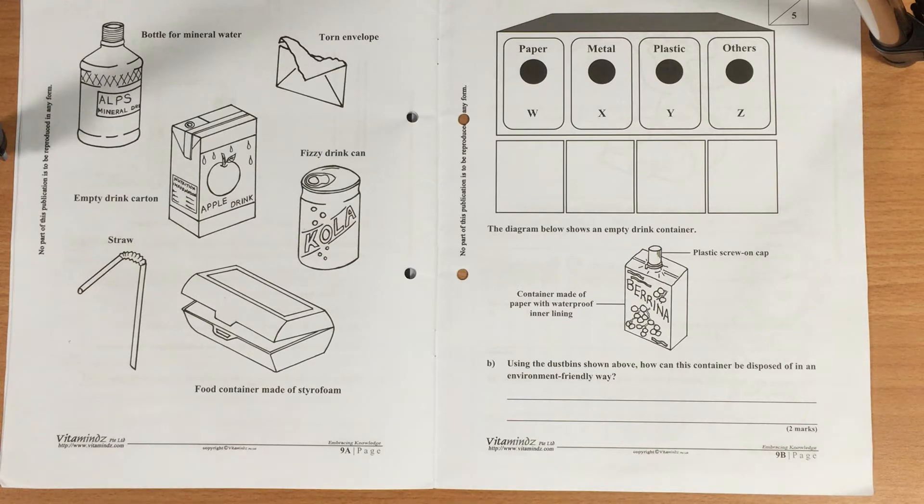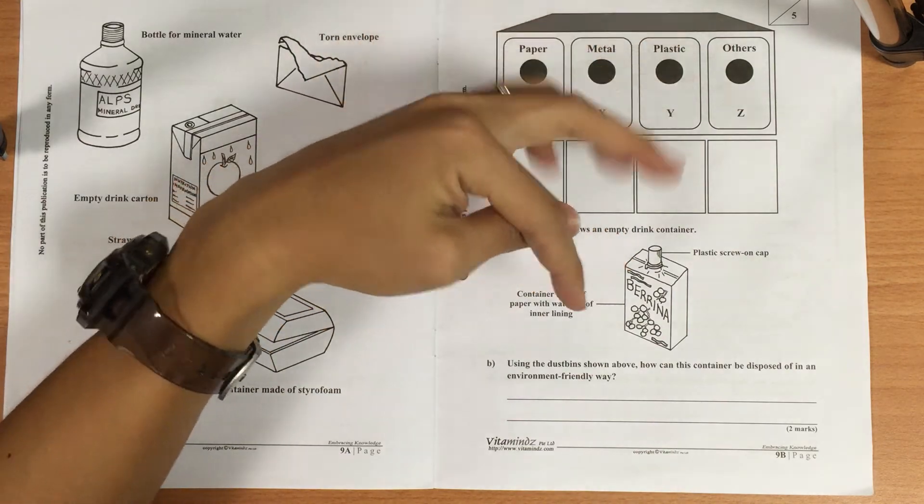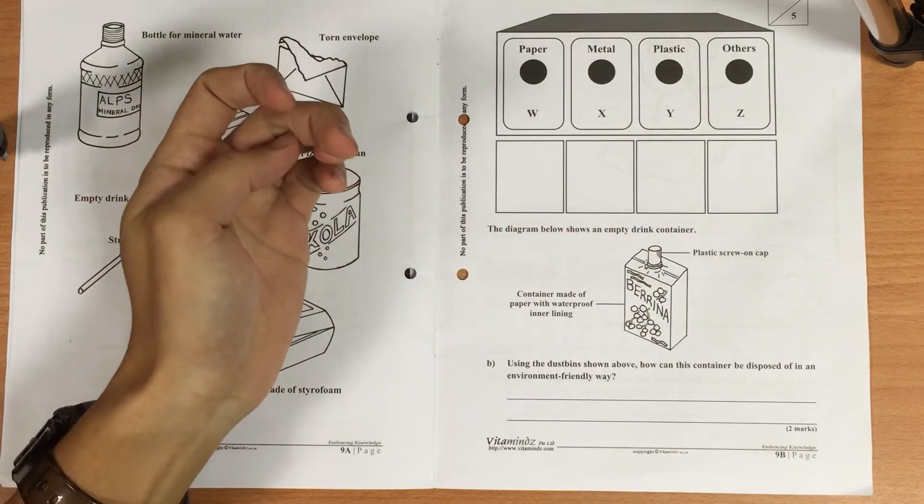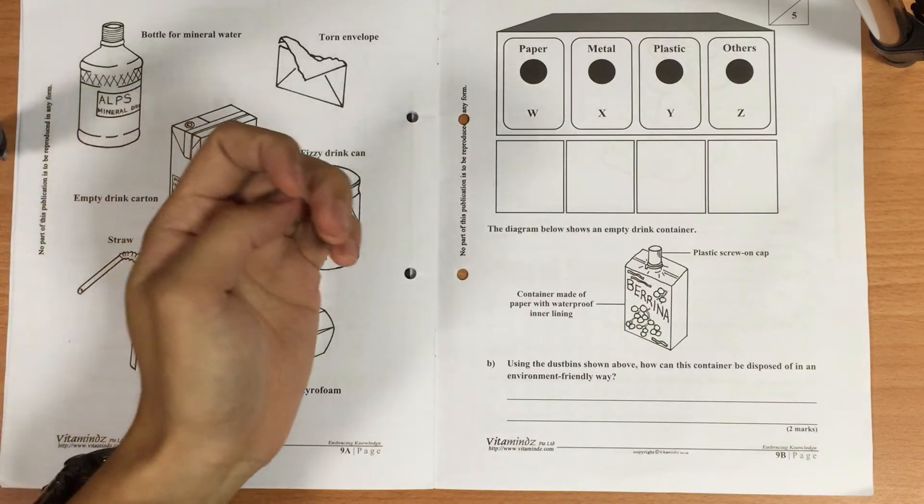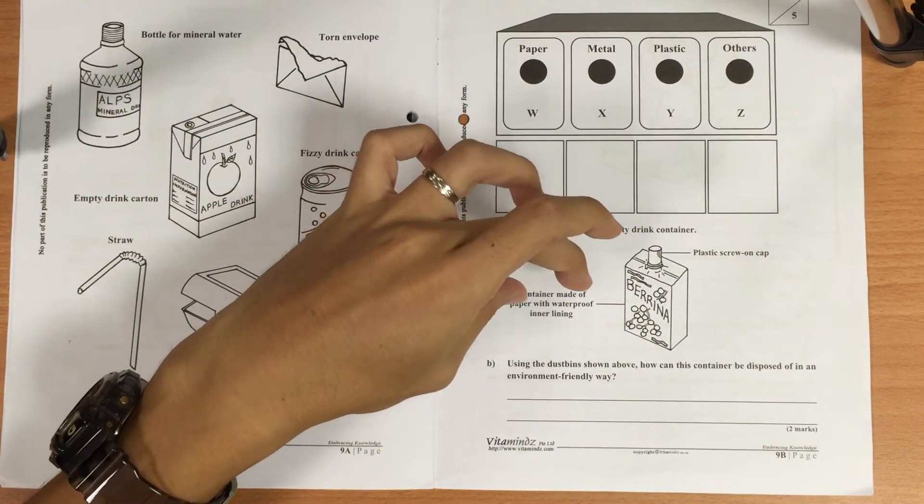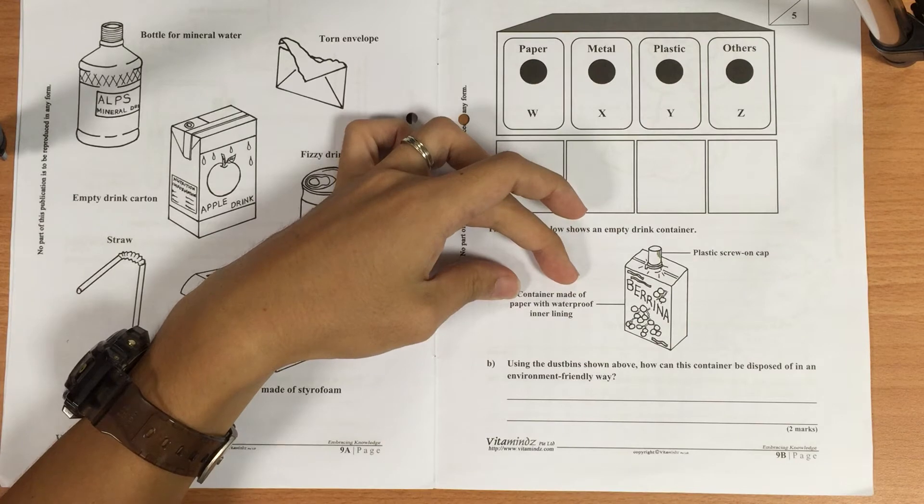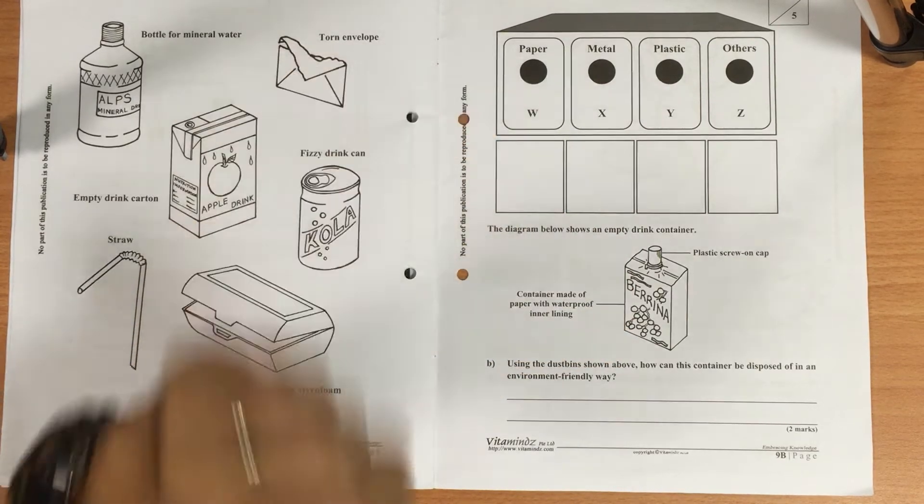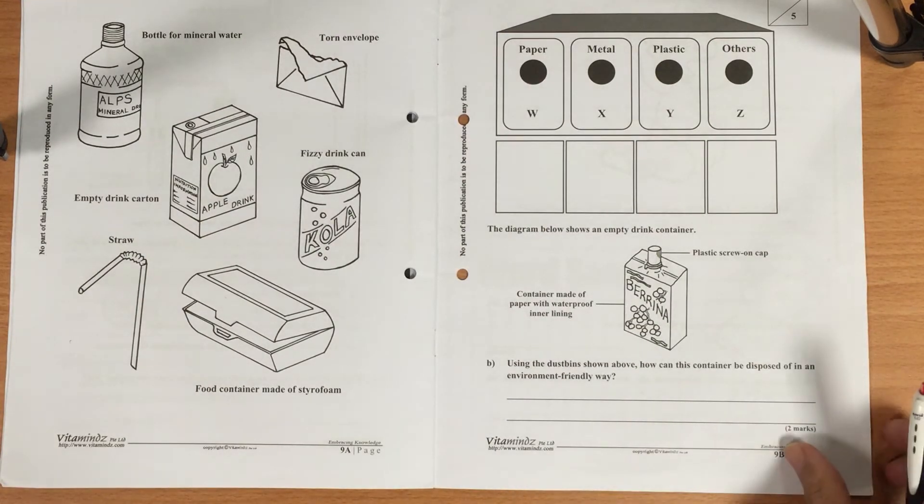If it's just one mark question, then perhaps maybe it might just ask about which dustbin would you place the container made of paper. So in that case, if I know it's just asking for this part regarding the paper container, I'll put it in the dustbin for paper, W.